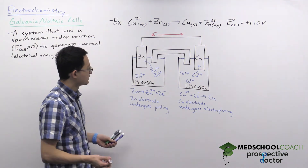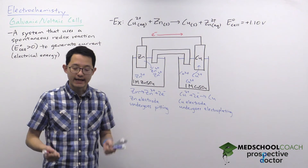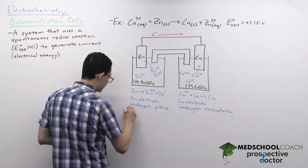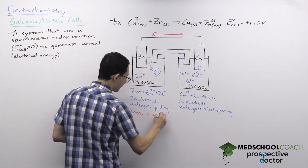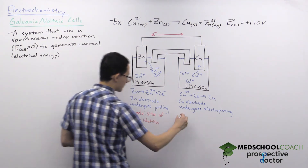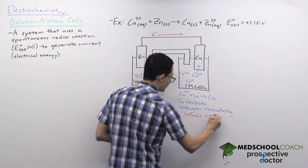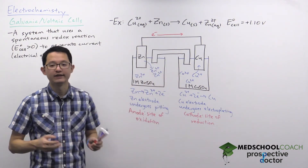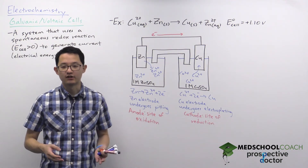We have special names for the two electrodes: anode and cathode. The zinc electrode is called the anode because it is the site of oxidation, and the copper electrode is the cathode because it is the site of reduction. A helpful mnemonic is 'An Ox Red Cat' — oxidation occurs at the anode, reduction occurs at the cathode.